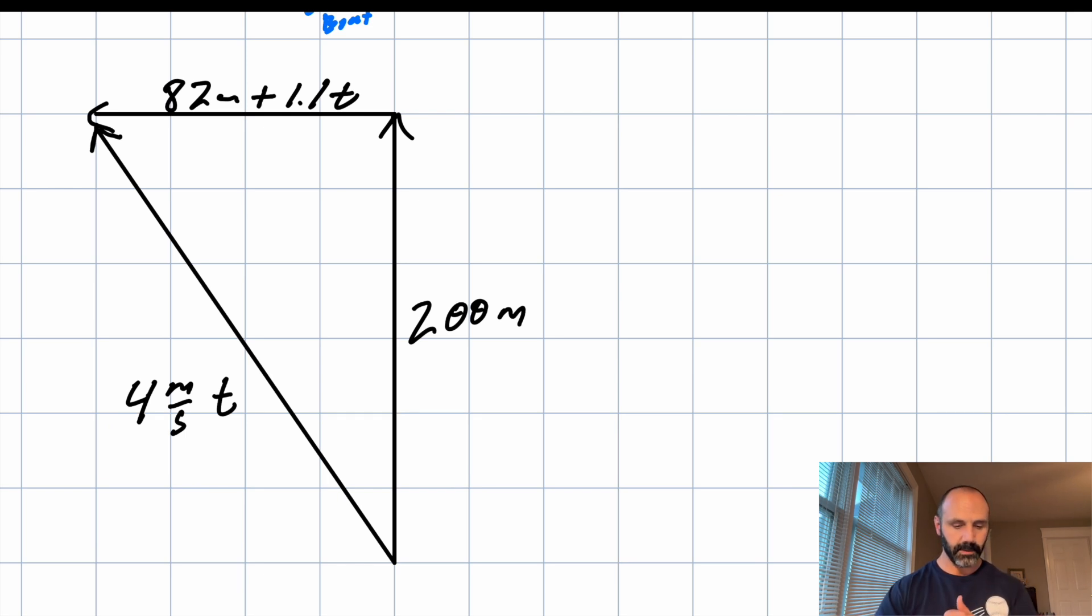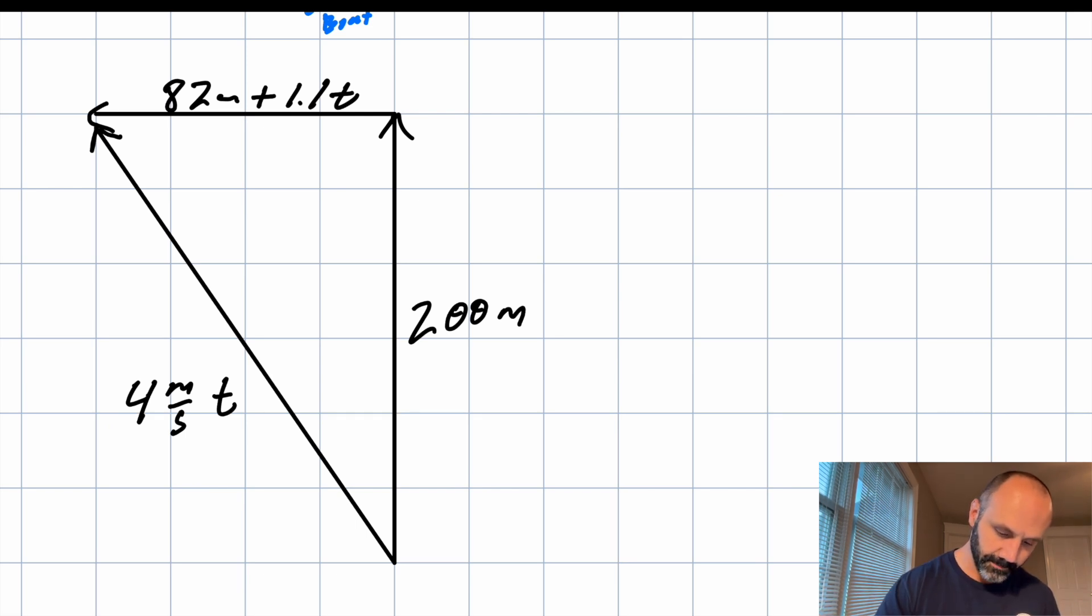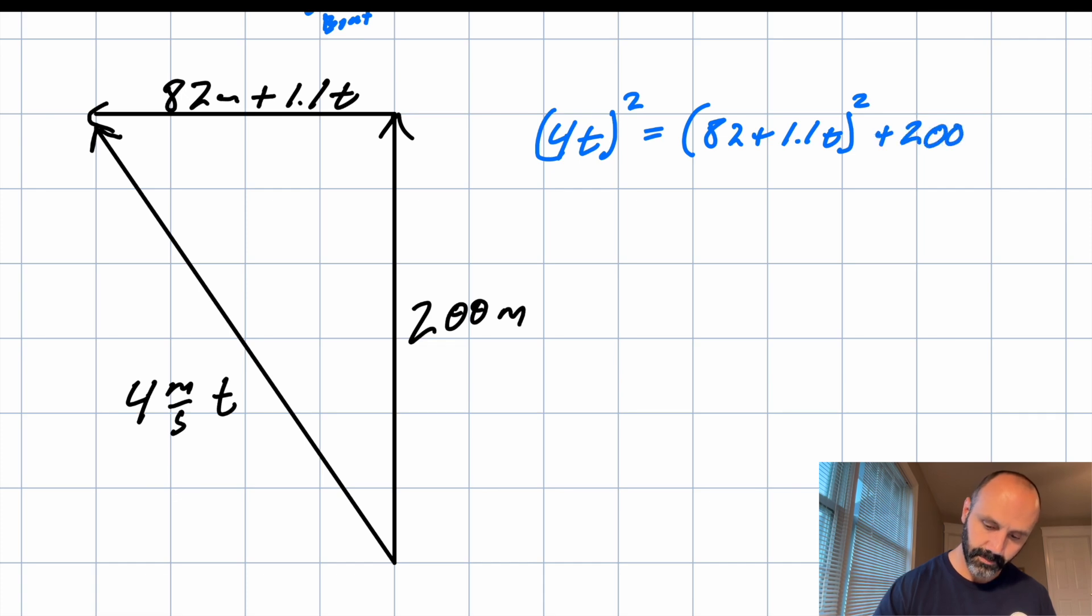So now I can just use the Pythagorean theorem to solve this. So the Pythagorean theorem would be 4t squared equals, and then the legs, right? 82 plus 1.1t squared plus 200 squared. Pythagorean theorem, a squared plus b squared equals c squared.